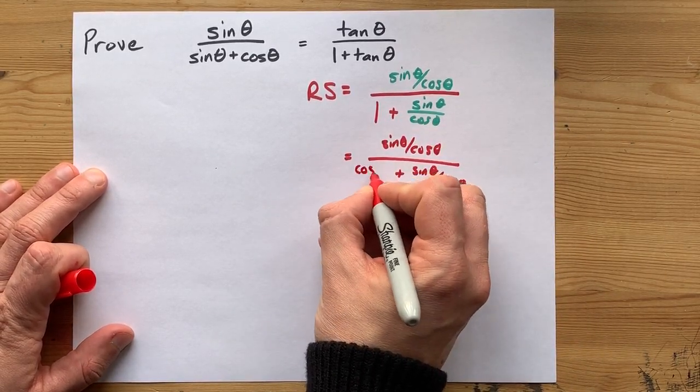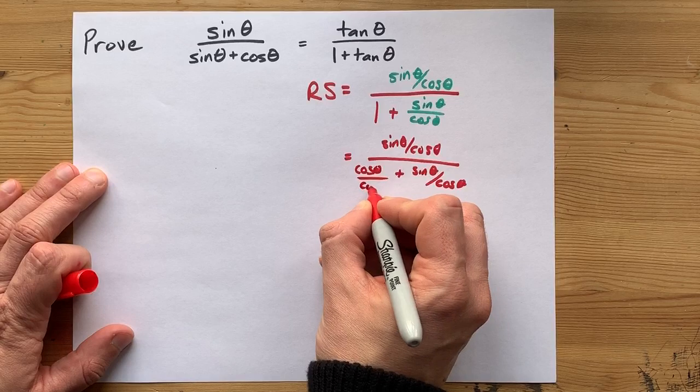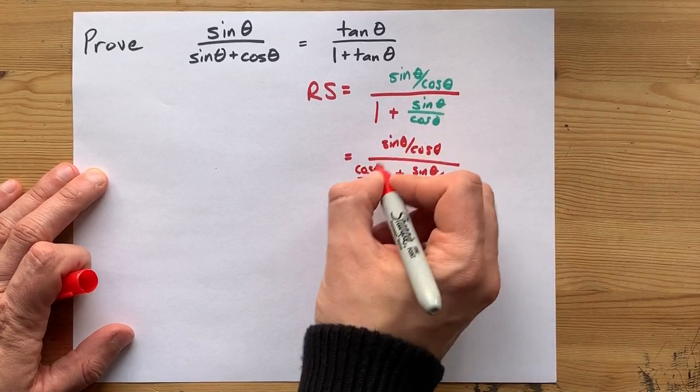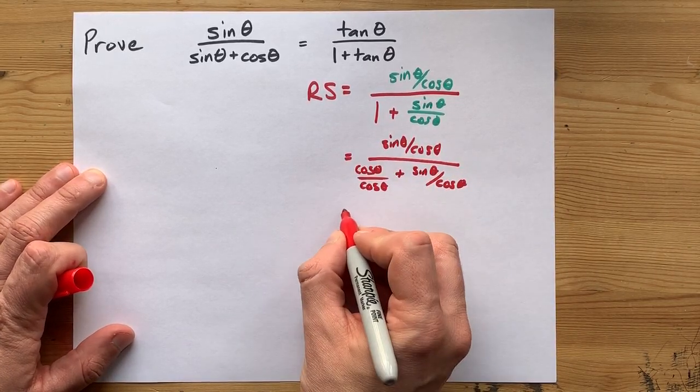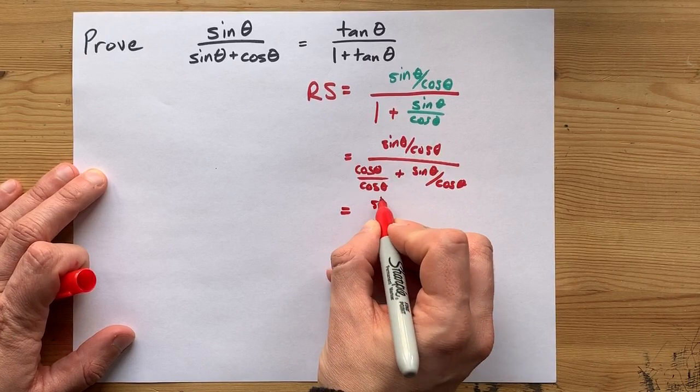1 happens to be anything over itself, so I'm going to choose cos theta over cos theta. Now, I'm still dealing only with the bottom.